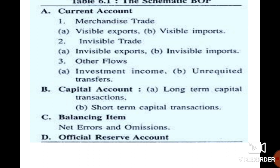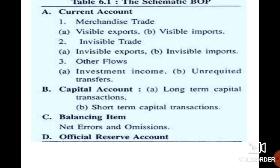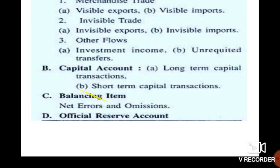The last account is the official reserve account. This account covers SDR (Special Drawing Rights), gold standards, and other reserve assets. So these are the three main types of accounts in balance of payment.